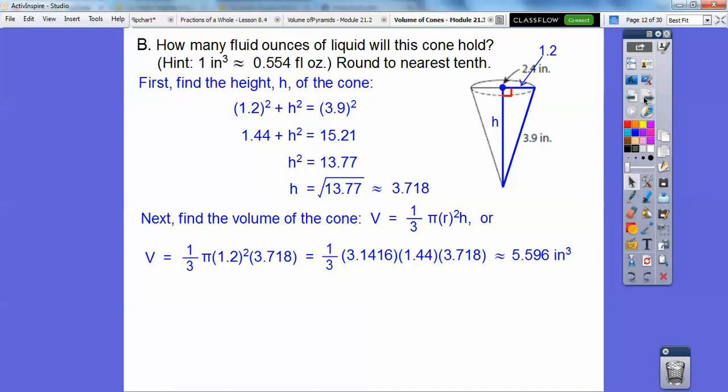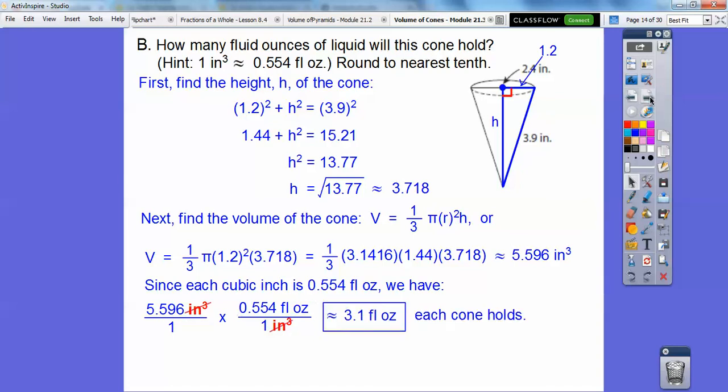So how many fluid ounces does it hold? So what we have to do is put this on top and put this on bottom, so 0.554 fluid ounces for 1 inch cubed. That way it cancels out that inches cubed and we do that right there. See how that's going to cancel right there? So now we just multiply this times this, and if we do that correctly, I think we get about 3.1 fluid ounces that each cone holds.